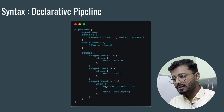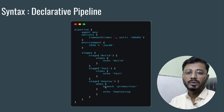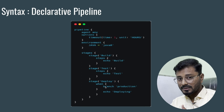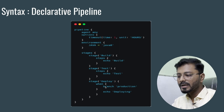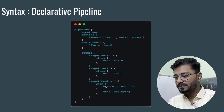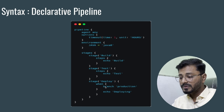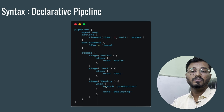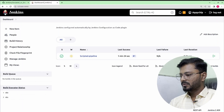The declarative pipeline syntax starts with the 'pipeline' keyword, then you specify an 'agent' — here set to 'any', meaning it runs on any available agent. You can specify options like a timeout using time and unit in hours, an environment block to set variables like JAVA=Java8, and then stages with Build, Test, and Deploy. Within each stage you have sequential steps, and you can add conditions — for example, deploy only when the branch is production.